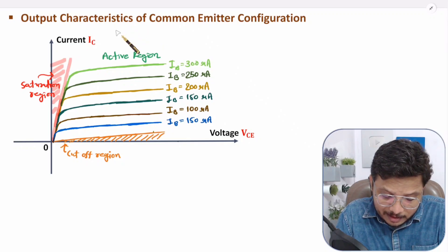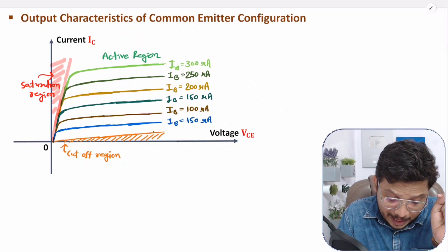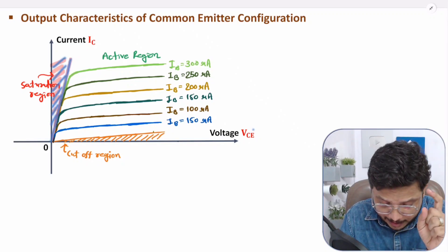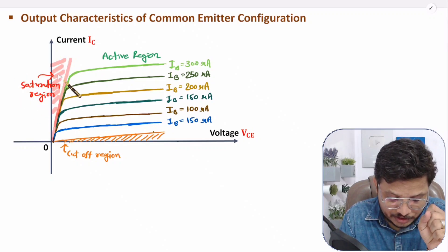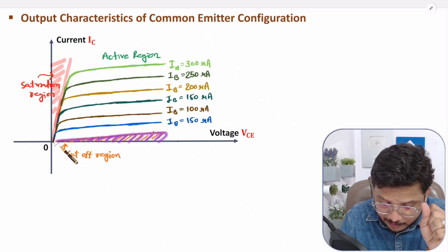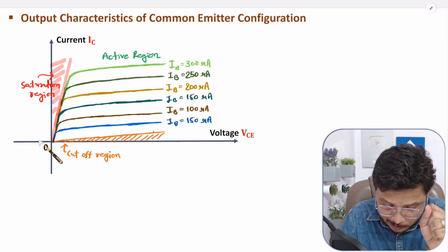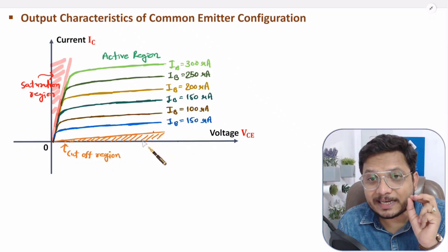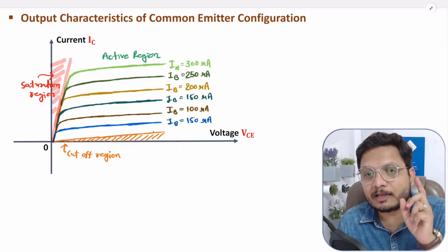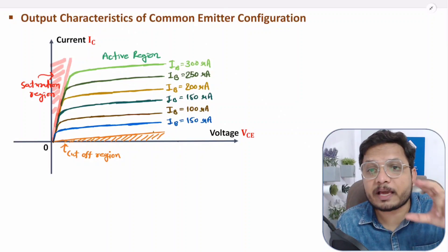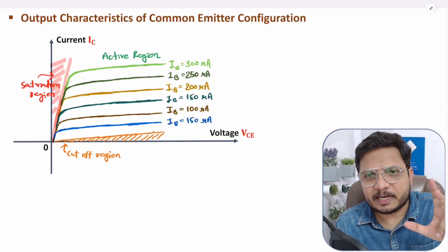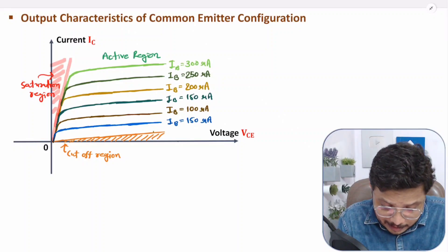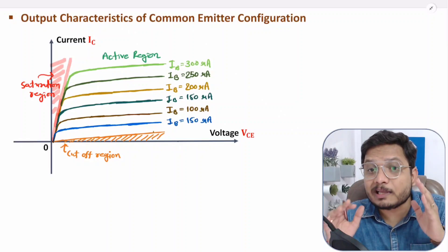From the characteristic, you can understand: if IC current goes high and VCE voltage stays low, the transistor will be in saturation region. If VCE voltage goes high and IC current stays low, BJT stays in cutoff region. If BJT stays in cutoff or saturation region, there is a possibility of clipping of waveforms. So when we operate BJT, it should be operated in the active region; otherwise there is a higher chance of clipping.